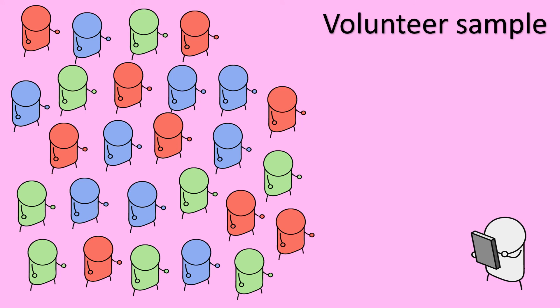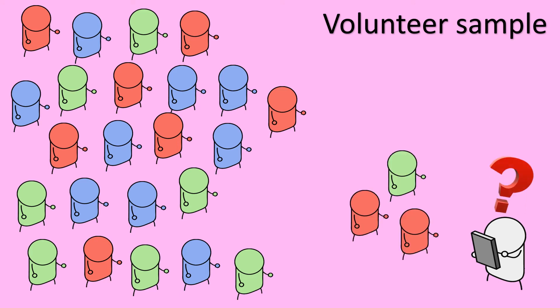A volunteer sample tends to be more unrepresentative. The researcher presents their question and asks for volunteers, and people come forward to take part. However, those who come forward often have a motive or specific reason for wanting to participate, so the sample carries its own bias and may not be representative of the wider survey population.